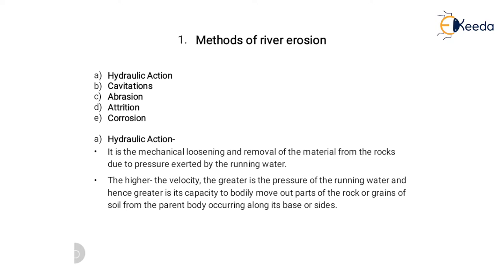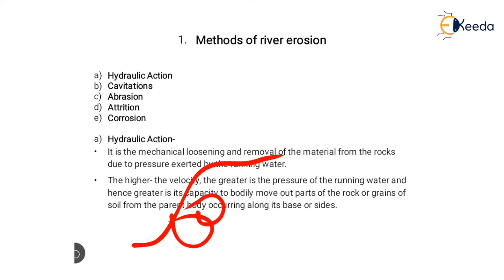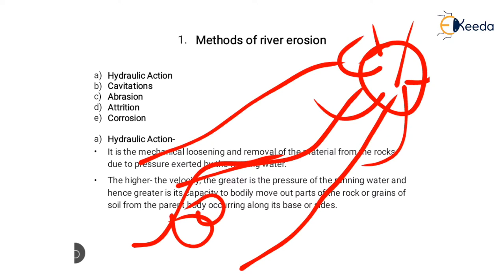Hydraulic action is the mechanical loosening and removal of material from the rock due to pressure exerted by running water. The higher the velocity, the greater the pressure of running water and hence the greater its capacity to bodily move out raw grains of soil from the parent body. Whatever material the river carries, when it travels across rocks, because of this pressure the rock starts to lose material and small holes are formed — this is called hydraulic action.